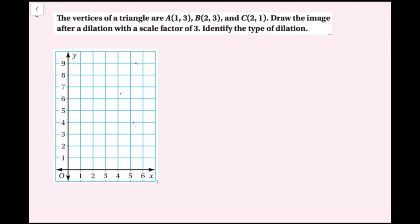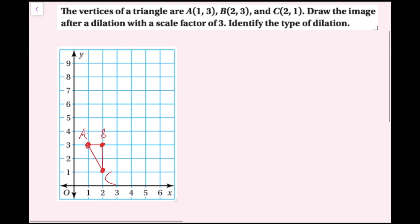For example two, the vertices of a triangle are a(1, 3), b(2, 3), and c(2, 1). Draw the image after dilation with a scale factor of three and identify the type of dilation. First I'm going to plot my original triangle in red: a is (1, 3), b is (2, 3), and c is (2, 1). Now I need to dilate this with a scale factor of three, and remember our center of dilation is always assumed to be the origin unless told otherwise.